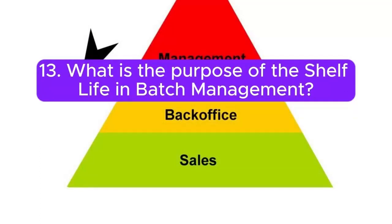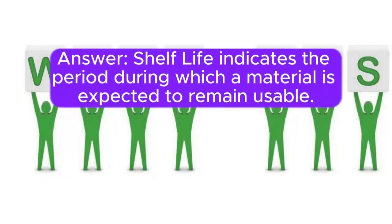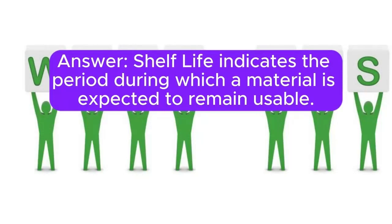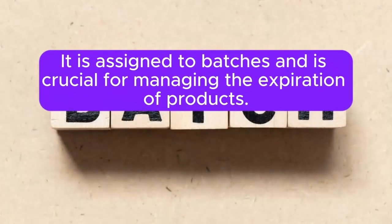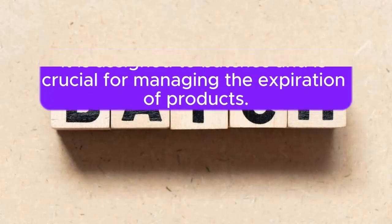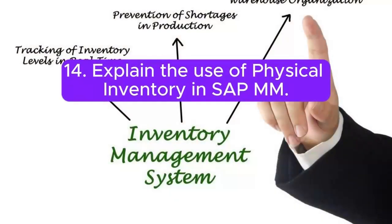Question 13: What is the purpose of shelf life in batch management? Answer: Shelf life indicates the period during which a material is expected to remain usable. It is assigned to batches and is crucial for managing the expiration of products.